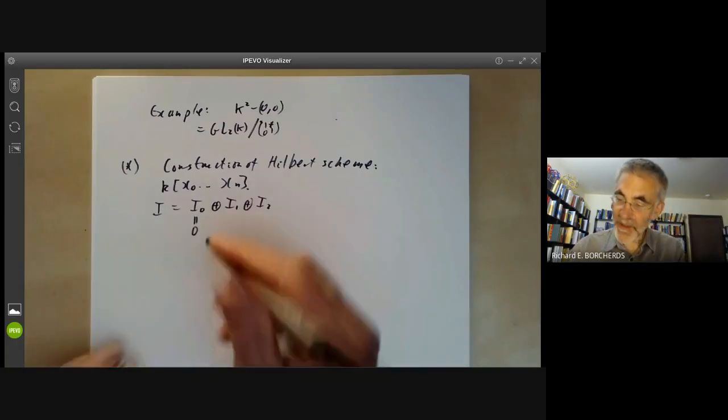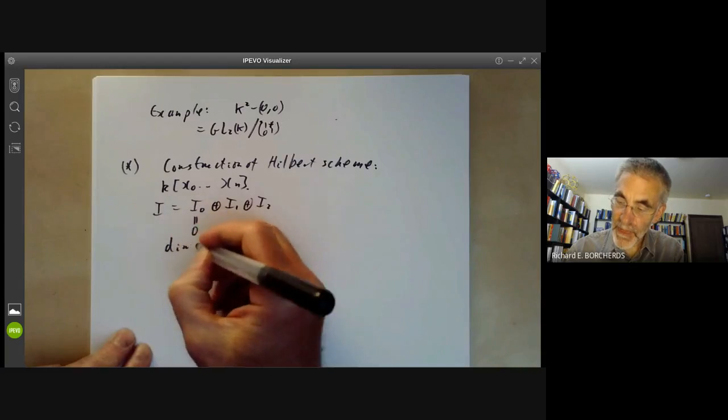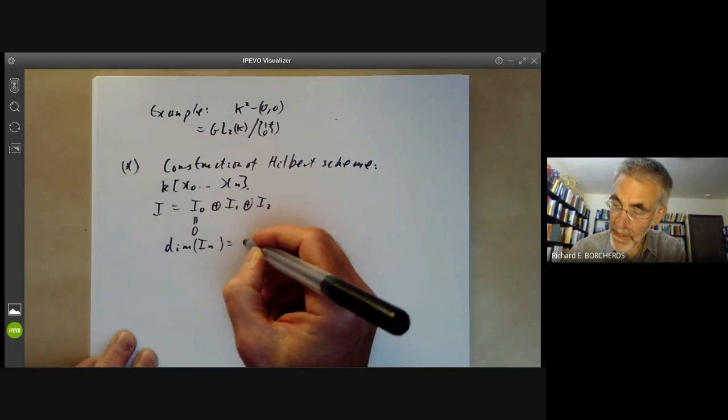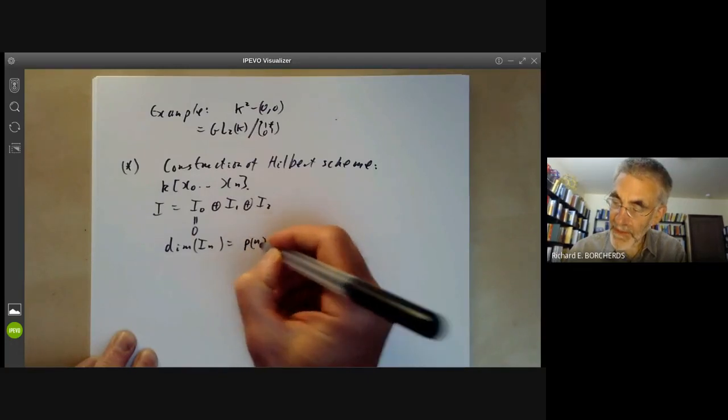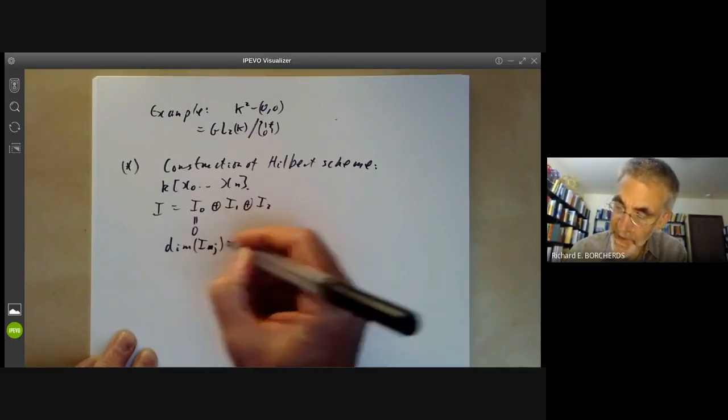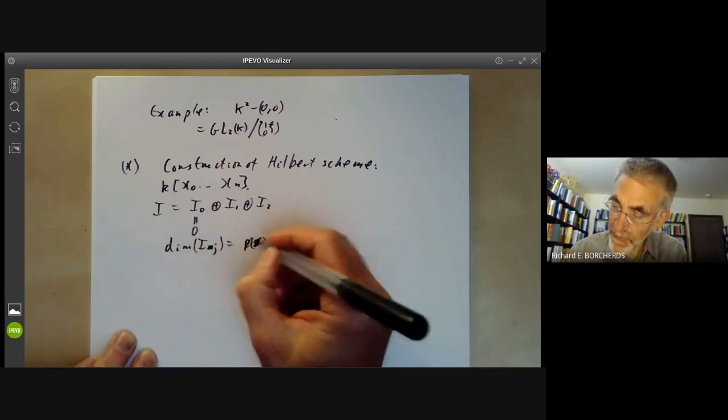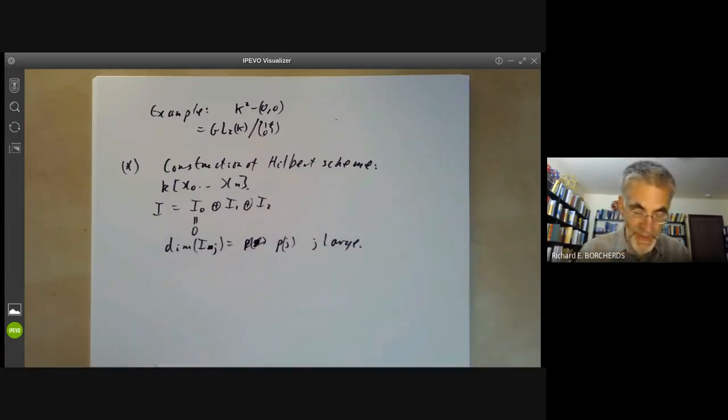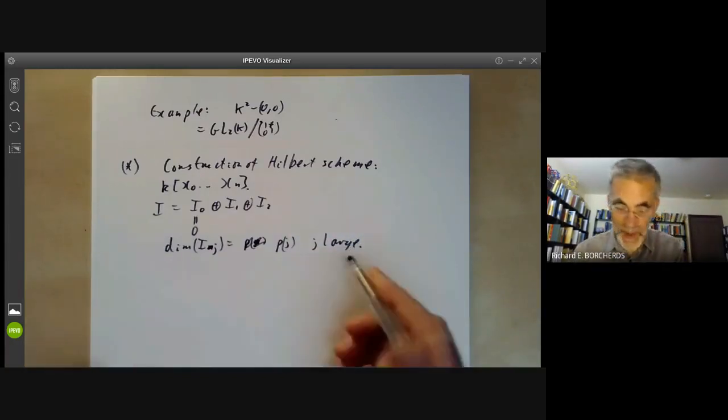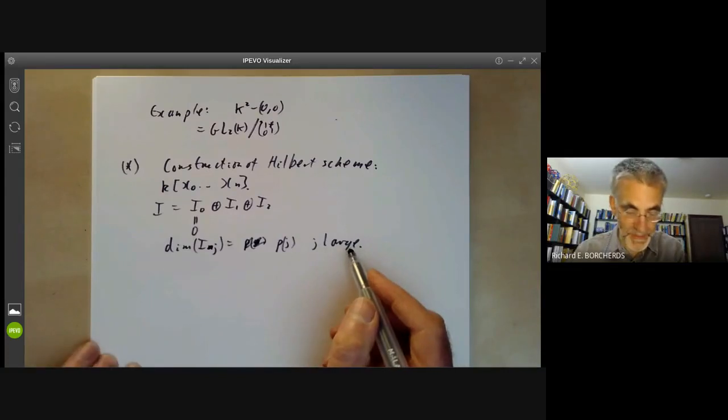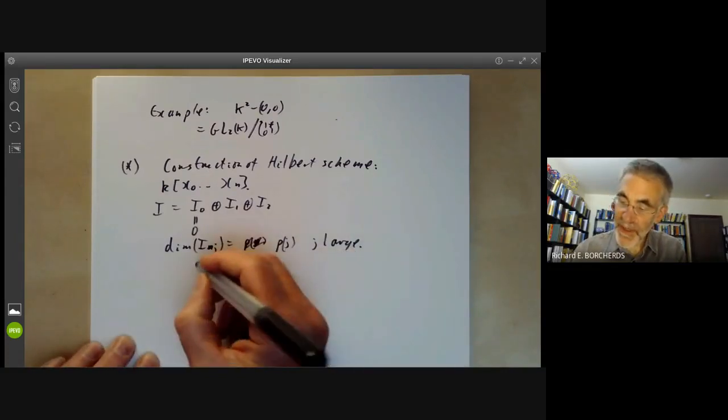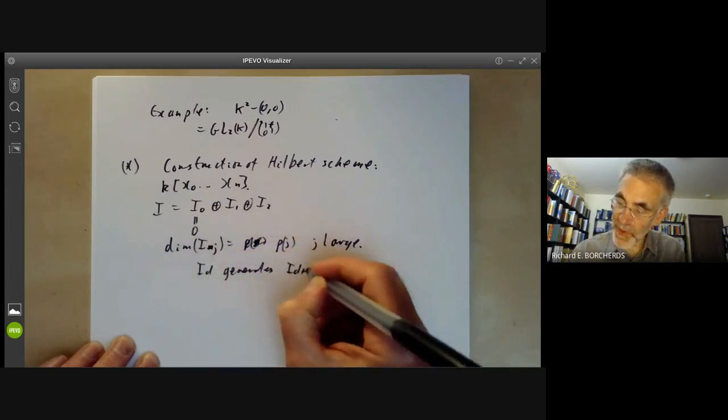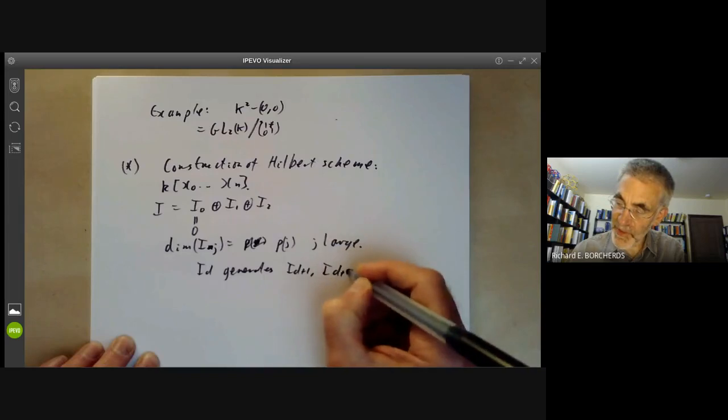So roughly speaking, you would like to be able to construct a point of projective space from an ideal like this. Well, how are you going to do that? Well, we will see later that the dimension of IJ is a polynomial in J for J large. It's more or less something called a Hilbert polynomial that we'll be talking about quite a lot later.